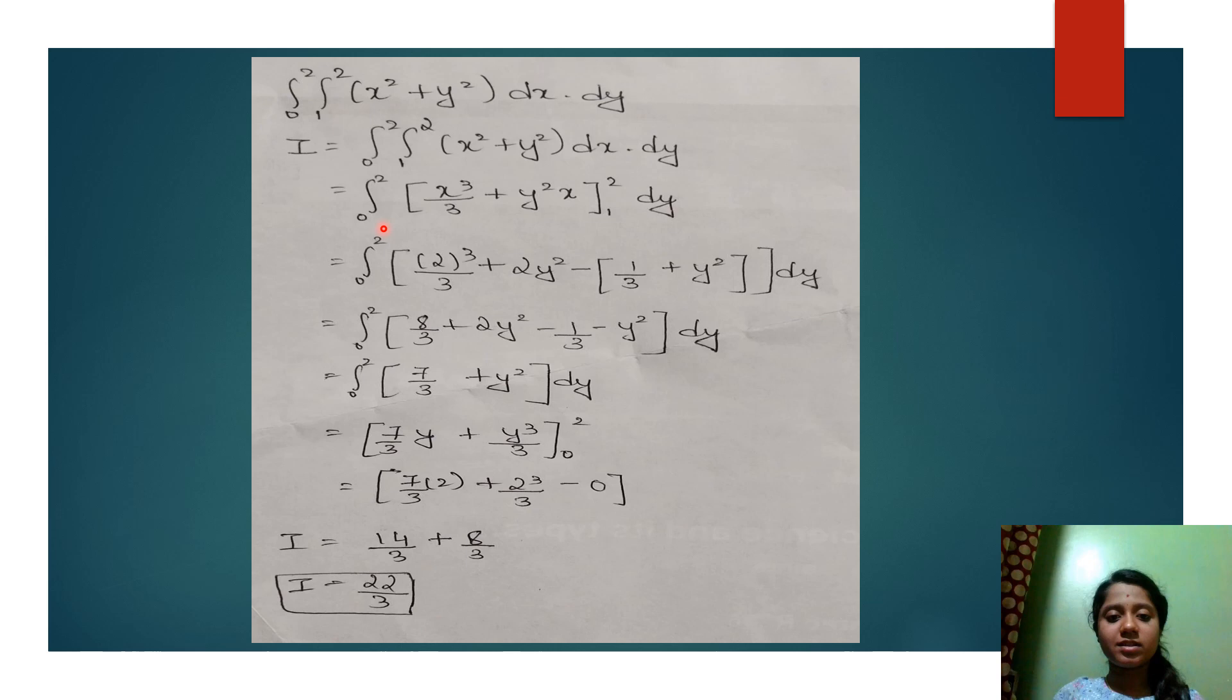The first step goes like this: integral 0 to 2 remains the same. Integrating x square with respect to dx gives x cube by 3 plus y square x, since y square is constant. Then the upper limit 2 and the lower limit 1 is shifted to the right hand side into dy.